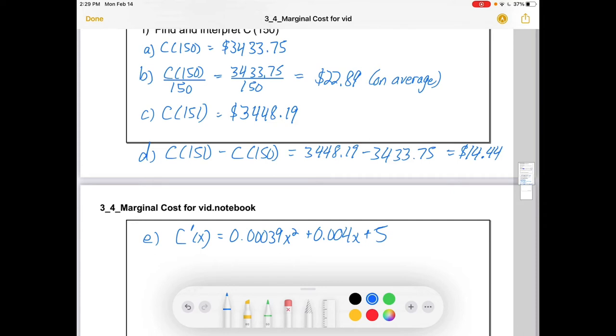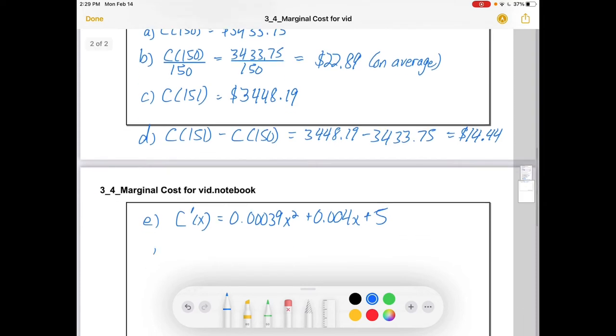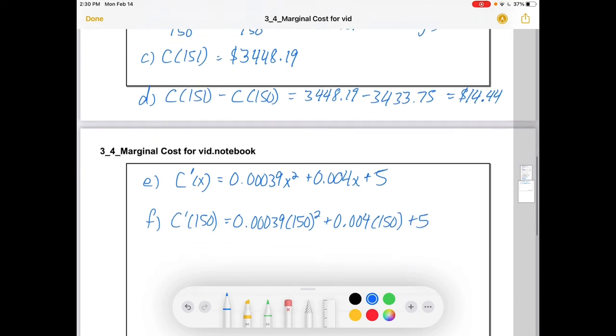And lastly, it says find C prime of 150. So if I want C prime of 150, I am going to sub it in here. It will be 0.00039 times 150 squared. And this is painful in our calculator, though less painful than working with those cubics has been to here. And if you work that through, you're going to get 14.375, or 14.38. You actually get a number that is only 6 cents off from this one over here.